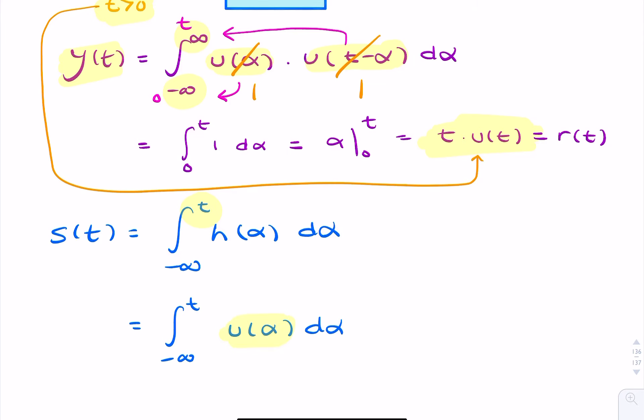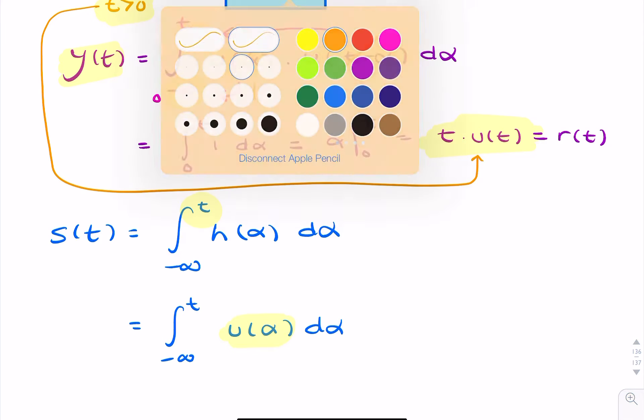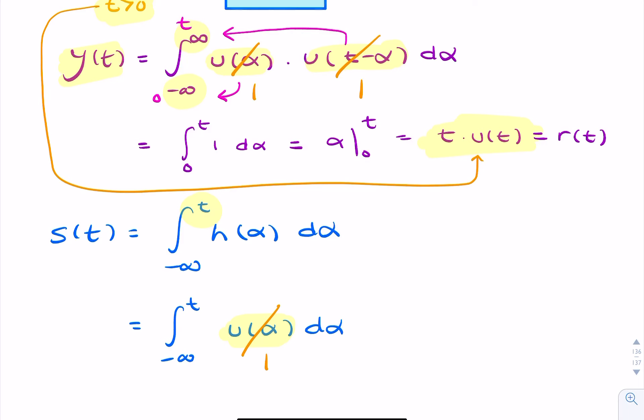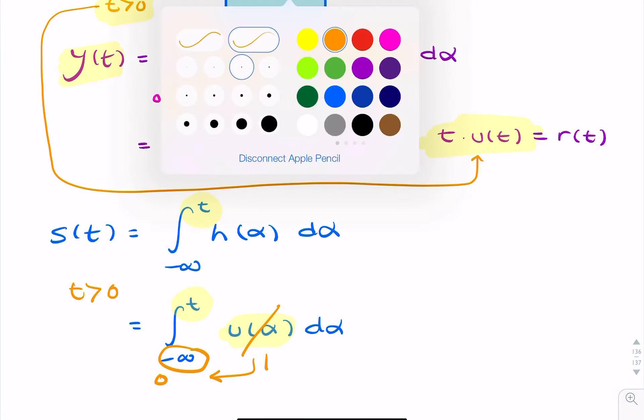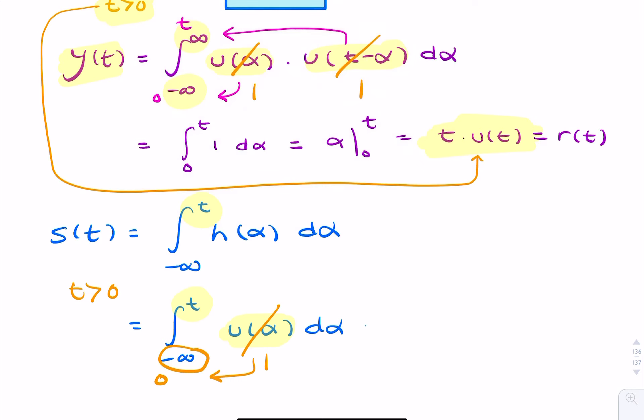And again, U of alpha, its value is exactly 1. Now, when this is 0, it has the effect of changing that limit. But this will only be true if T is greater than 0. So we just remind ourselves here that T has to be greater than 0. So we're now integrating from 0 to T of 1, d alpha, and we get exactly the same result.